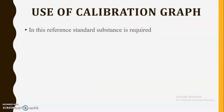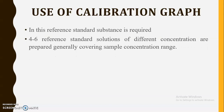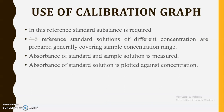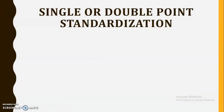The second method is the use of a calibration graph, which is commonly used. A reference standard substance is required. Four to six reference standard solutions of different concentrations are prepared, and the absorbance of both standard and sample solutions is measured. Absorbance of standard solutions is plotted against concentration to get a straight line. The unknown sample absorbance is then extrapolated on this graph to determine its concentration.